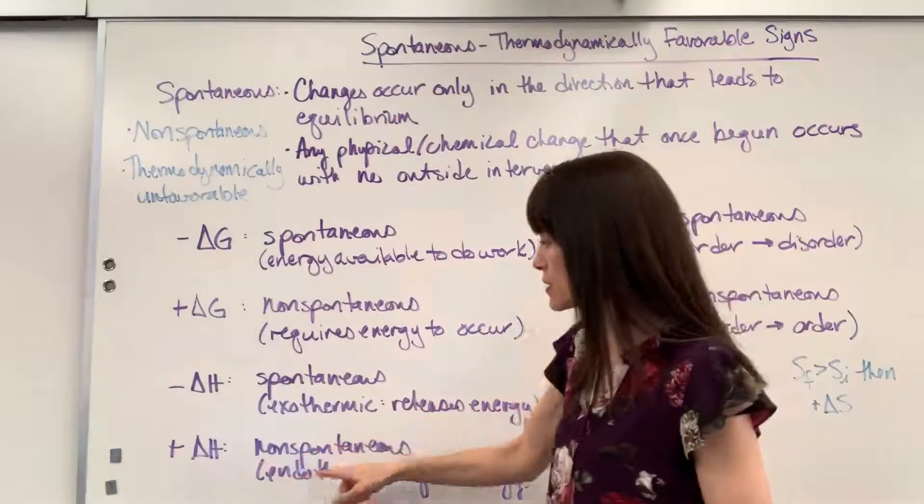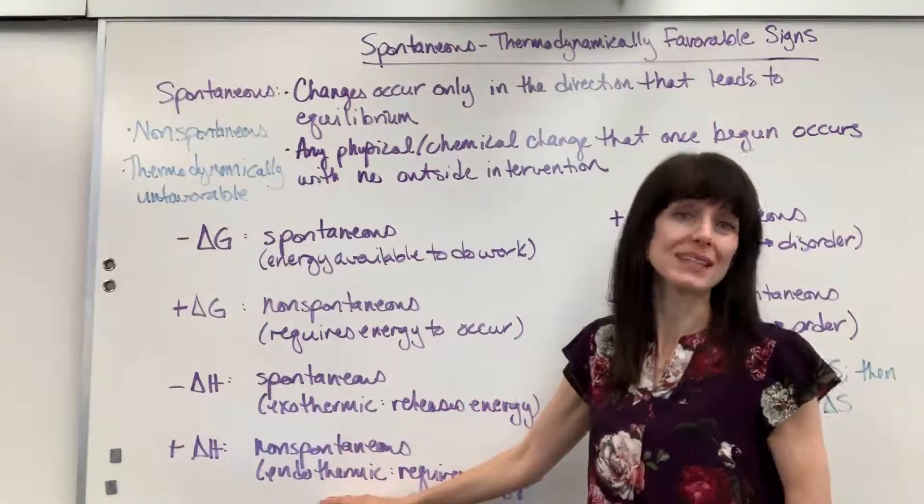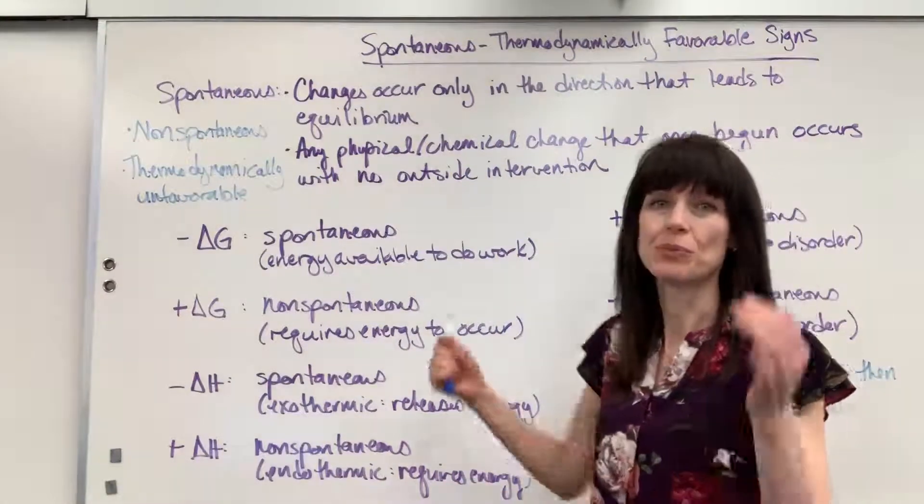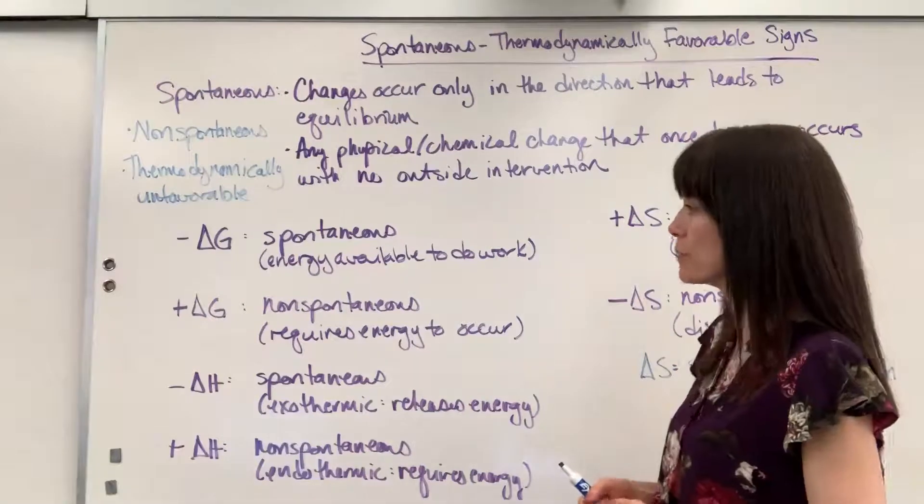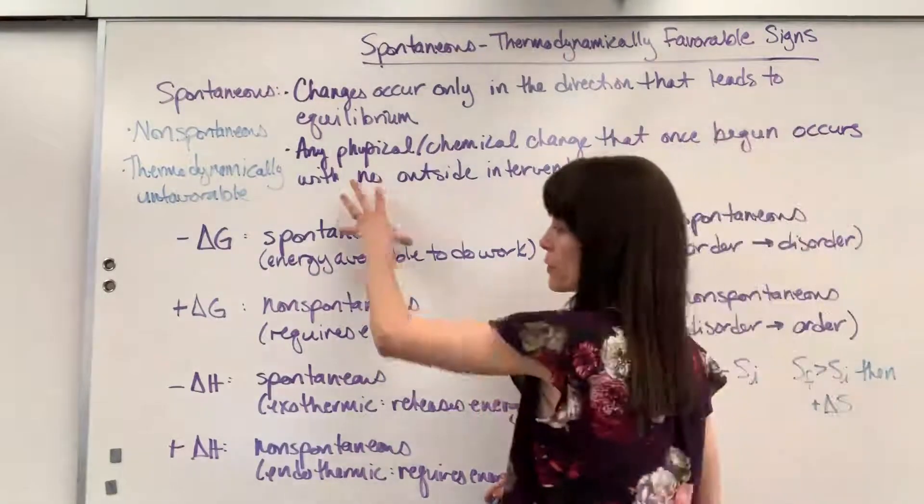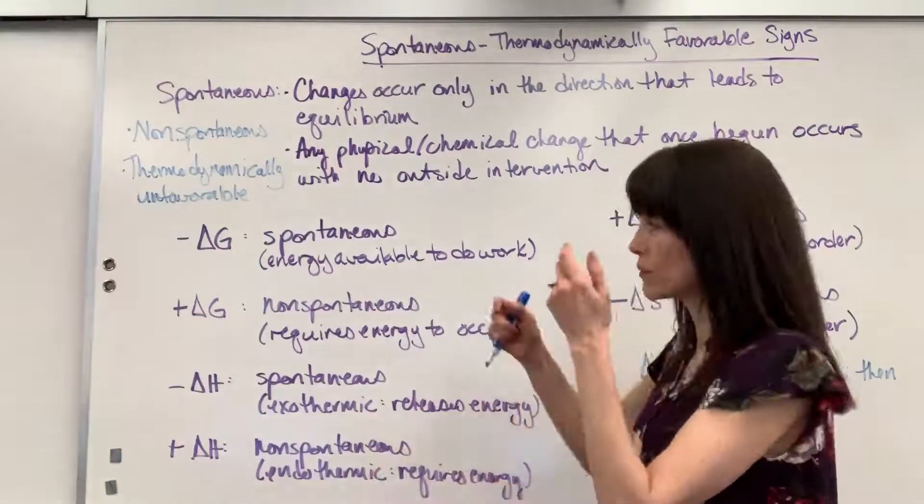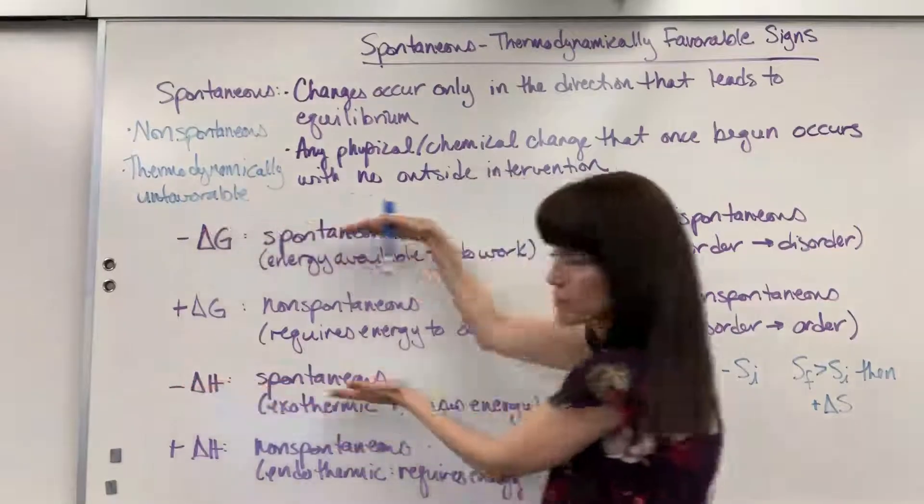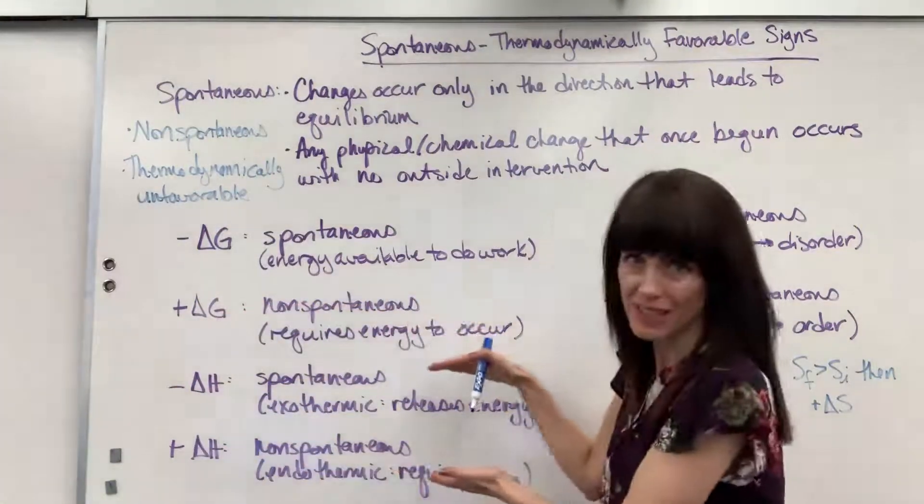A positive delta H is non-spontaneous, and of course, positive delta H, you remember, is endothermic, where this requires energy. So we need to put energy into the system in order for that reaction to occur. So I purposefully put delta G and delta H on this side, so it would help you remember they have the similar signs. Negative delta G, negative delta H, spontaneous. Positive delta G, positive delta H, non-spontaneous.